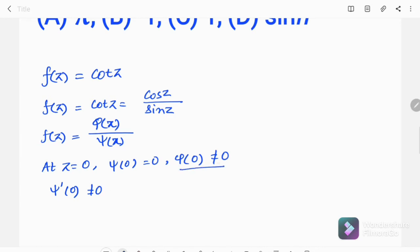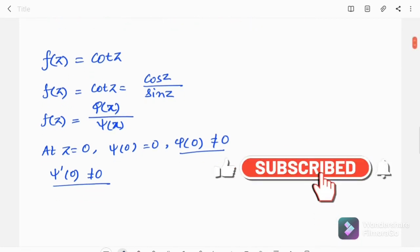As φ(0) is not equal to 0 and ψ'(0) is not equal to 0, we can say that z equal to 0 is a simple pole here for function f(z).